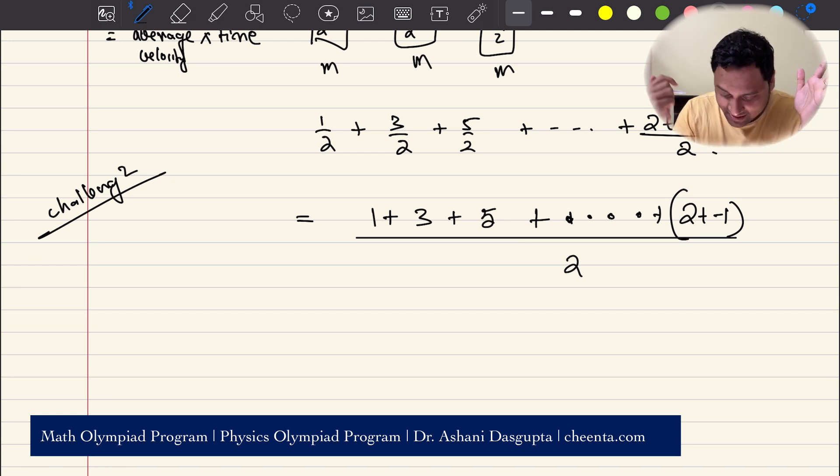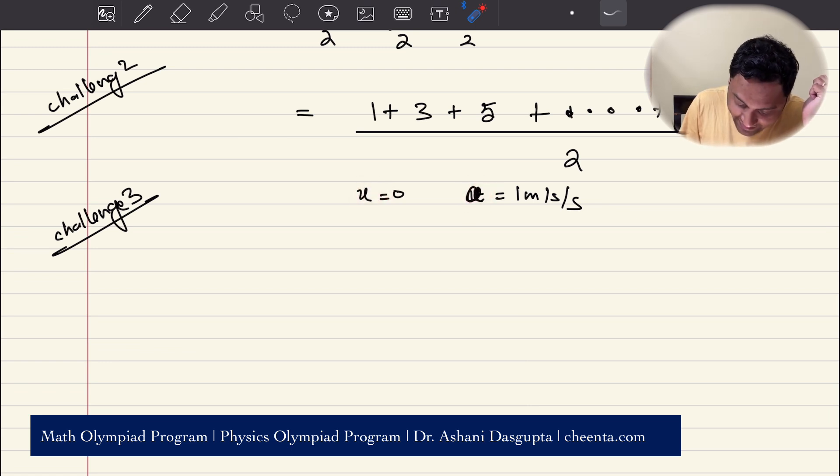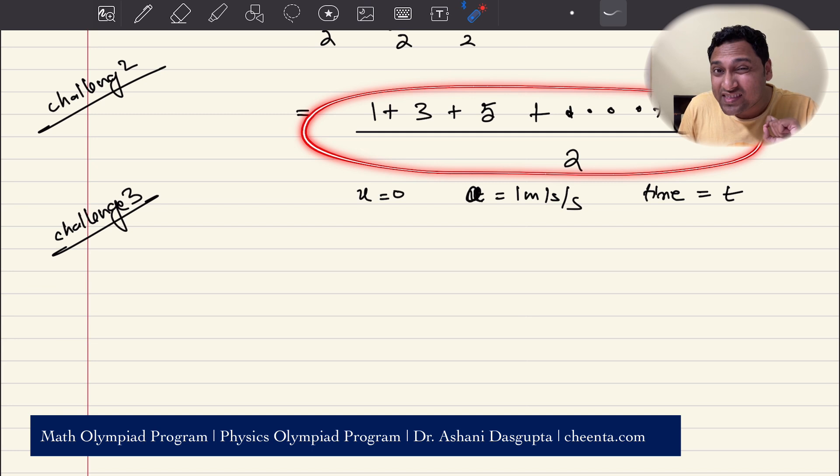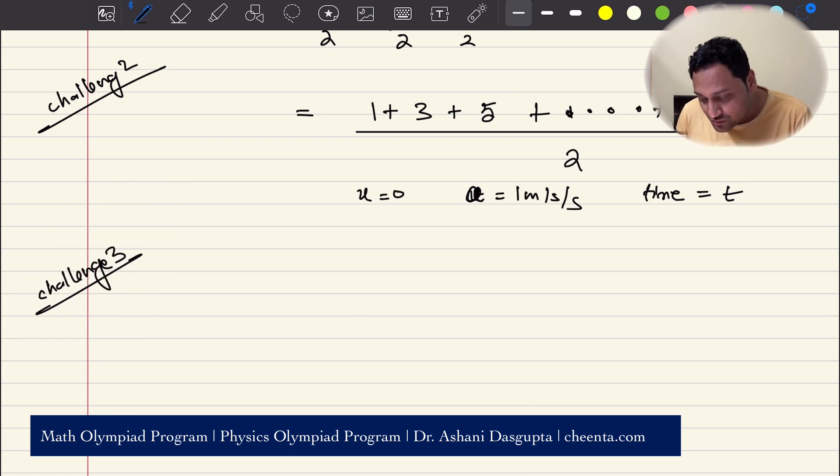This can be modified to give you the entire equation for motion. That's challenge three. In challenge two, the initial velocity is zero, acceleration is one meter per second per second. This formula will give you the displacement for these values. What if you want to generalize it? Take initial velocity as u, acceleration as a, and time as t. With these three values, can you deduce using the method I mentioned the general formula? It's very simple.